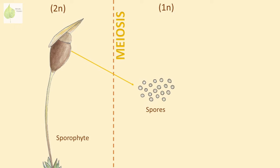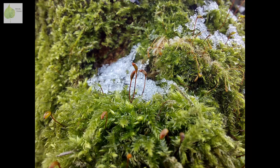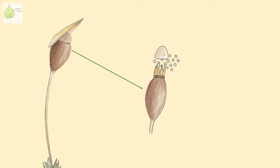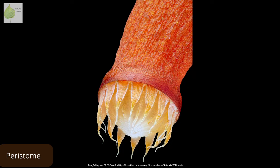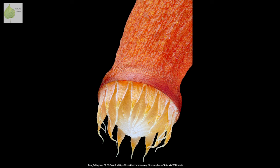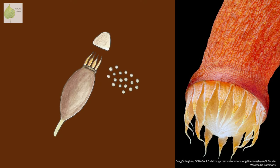When spores inside the capsule mature, the calyptra is shed, the operculum opens up, and the spores are released. The rim of the capsule is frequently lined by triangular teeth collectively called the peristome. Peristome teeth move inward and outward in response to humidity, aiding the release of the spores.